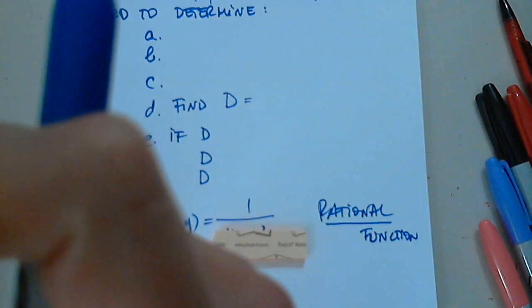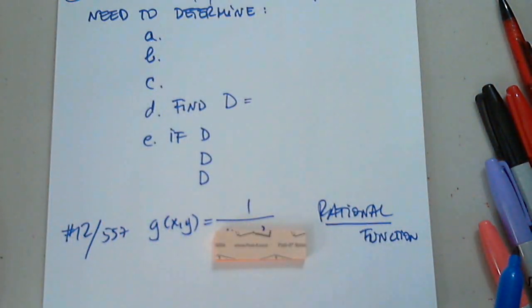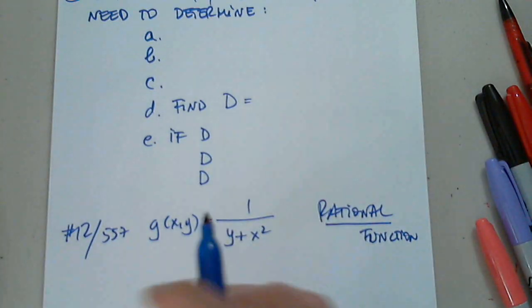We don't worry about anything else. They can be undefined. Yes. And when is a rational function undefined? When the denominator is zero. Excellent.